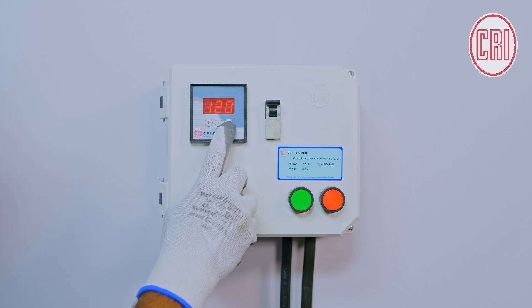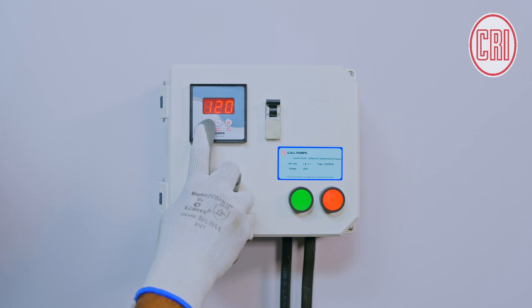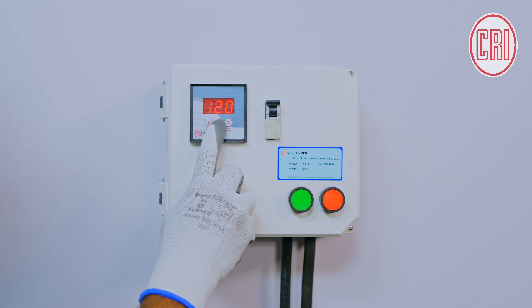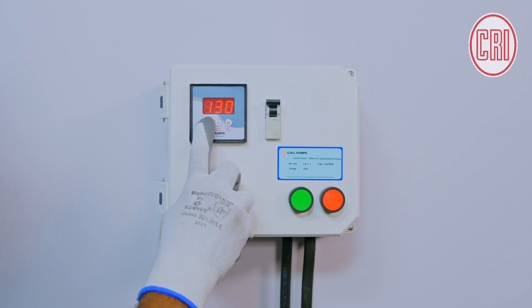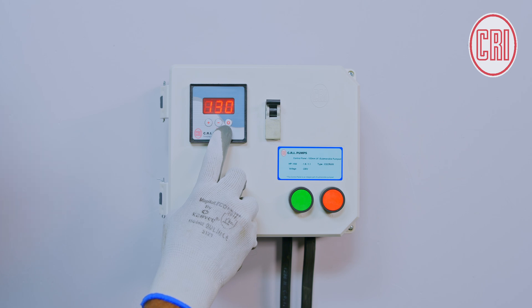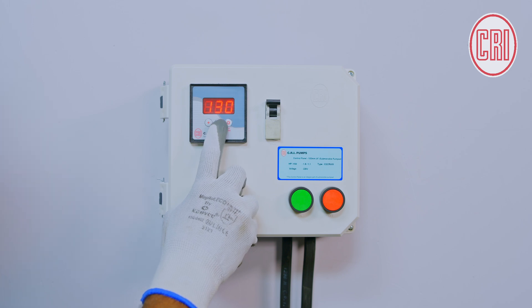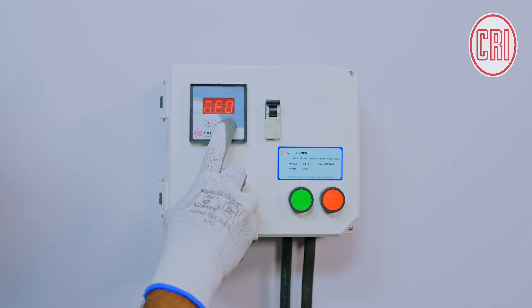If it goes above 120%, it will trip and the pump will be protected. We may also press the plus button and increase it to 130%, or use the decrement button to reduce it to 120%. But default is 120%. If it goes above 120%, the power supply to pump will be cut off automatically and the motor will be protected. In case we set it to 130% from motor rated current, if it goes above 130%, it will trip and protect the motor. Later, we are setting it to 120% and saving it.